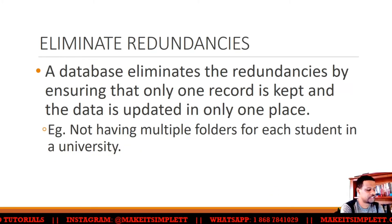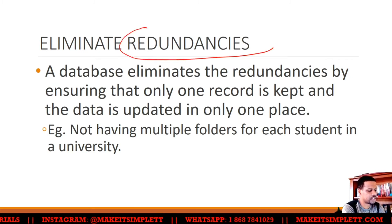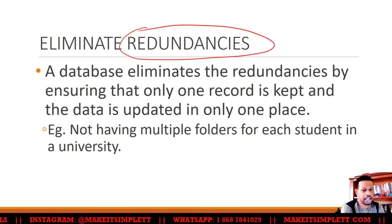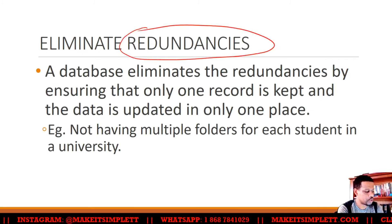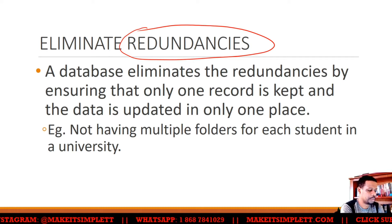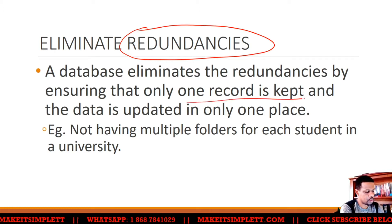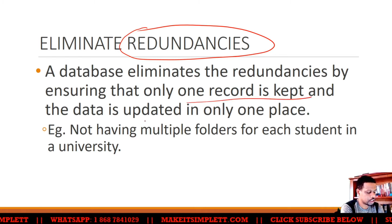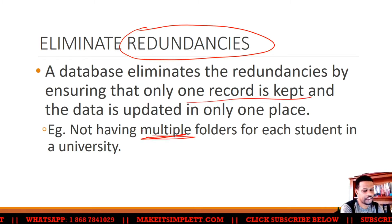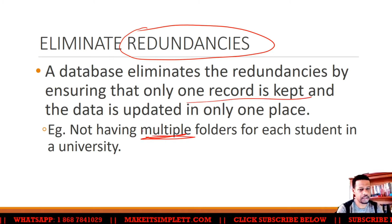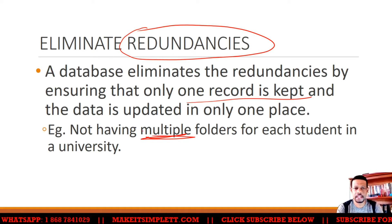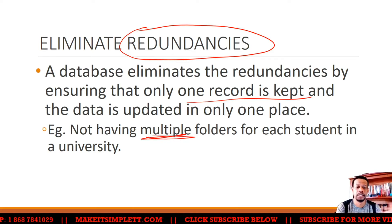Eliminating redundancy is a big part of databases — this is why we have normalization, which we'll get to shortly. Eliminating redundancy means making sure that only one record is kept for the data. You shouldn't have multiples of anything, because if you do, your data will be hard to manage, hard to organize, and you will most likely make mistakes.